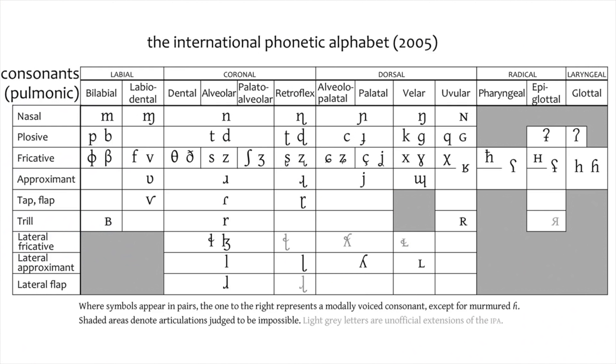Now as much as possible, the IPA tries to harmonize with the Latin alphabet. So, for the most part, if you see a symbol that looks like an L, it'll be a sort of L-type sound.